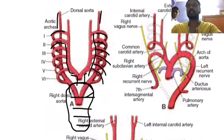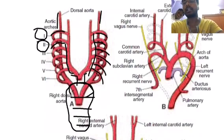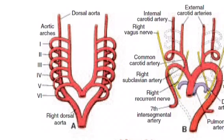The aortic arches are formed around the pharyngeal arches, so they are named from cranial to caudal: the first aortic arch, second aortic arch, third, fourth, fifth, and sixth aortic arches. Now we know where the aortic arches are developed from.